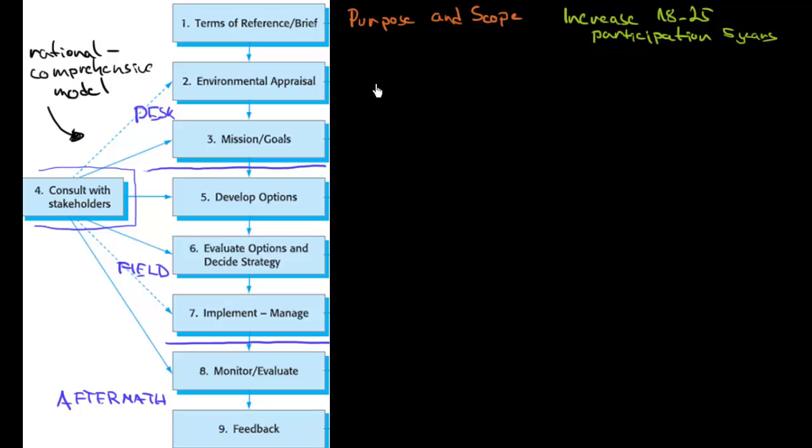What comes next is called the Environmental Appraisal. You should basically try to find some secondary data about the environment. Maybe there are already some secondary data, maybe our company already has got the statistics about the participation. So I will search for them and maybe thanks to them I will be then maybe better able to set my missions goals and develop my options. In case of our small touristic attraction it can be considering existing supply and demand.